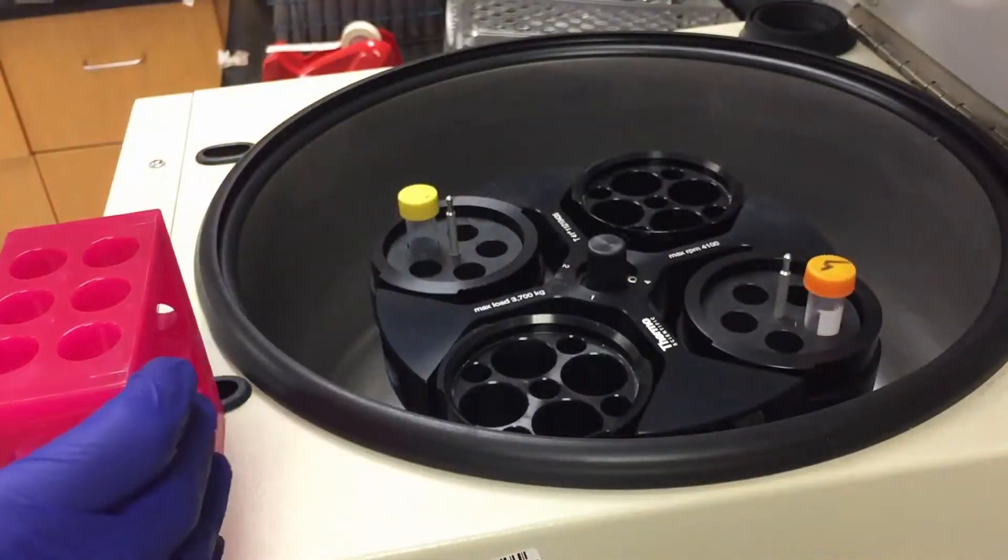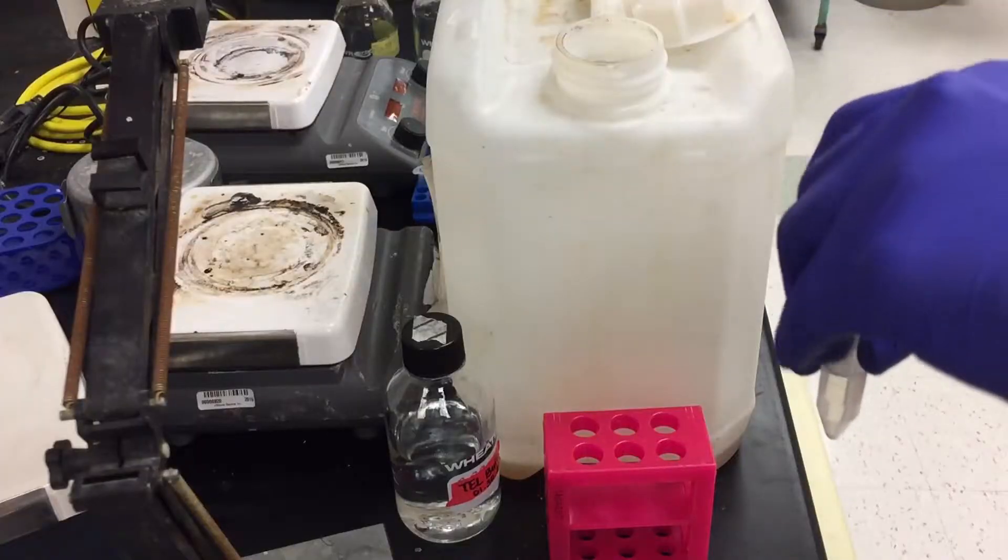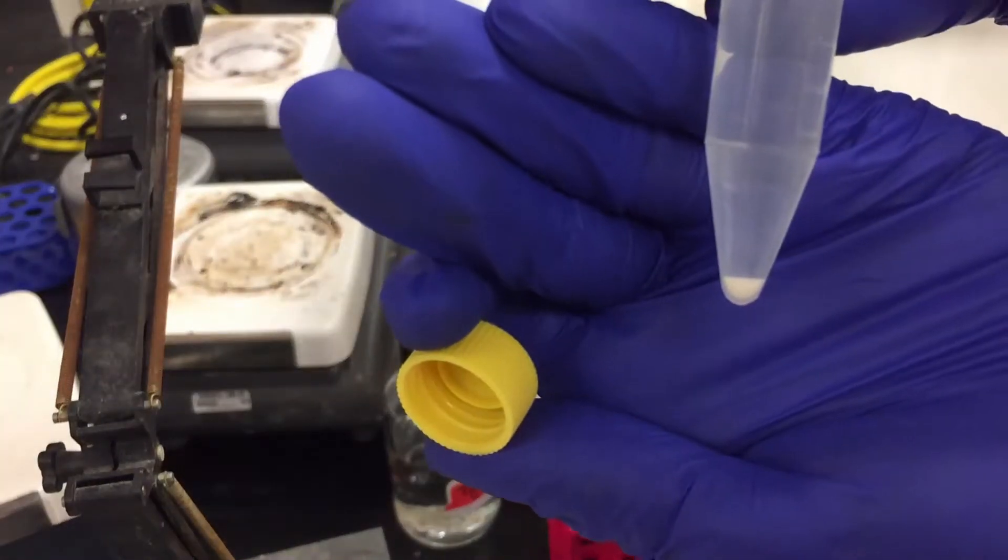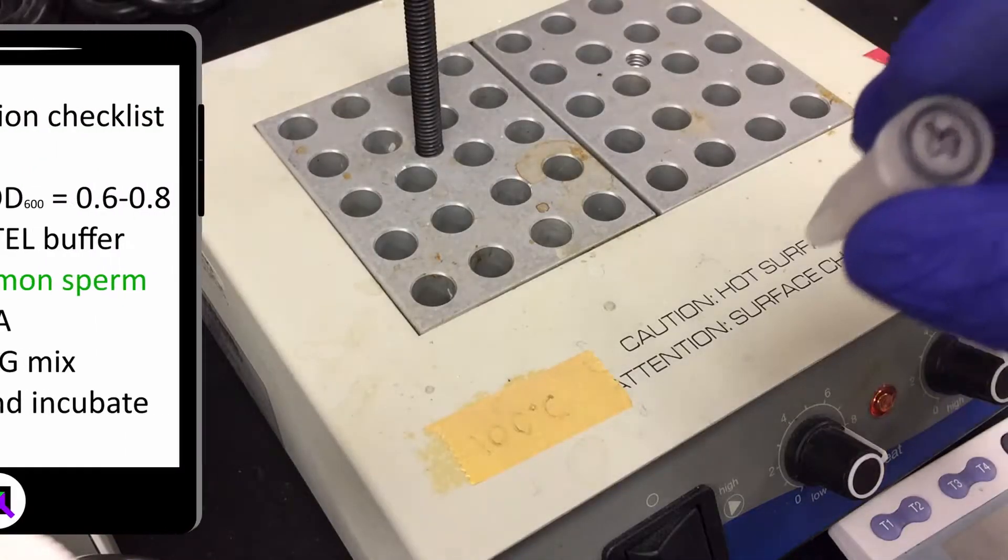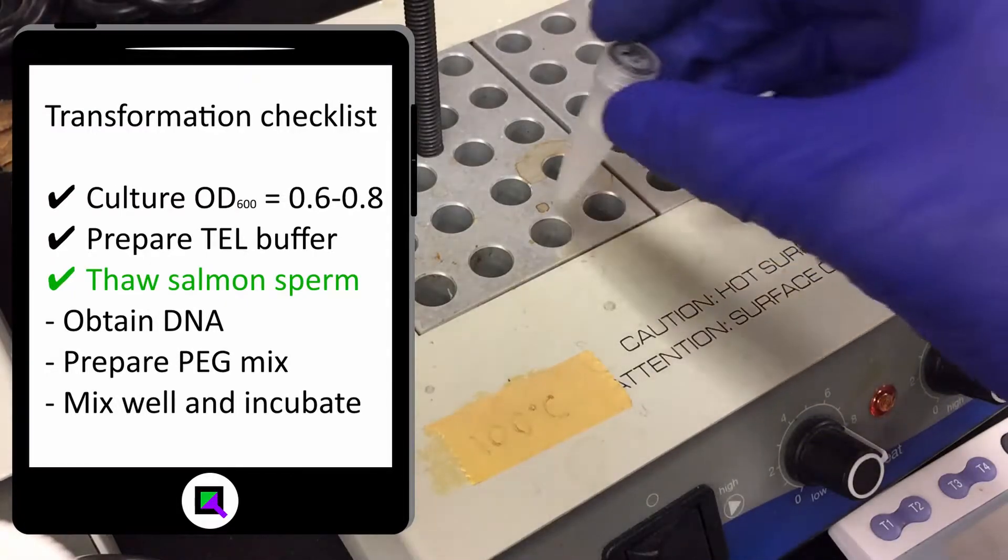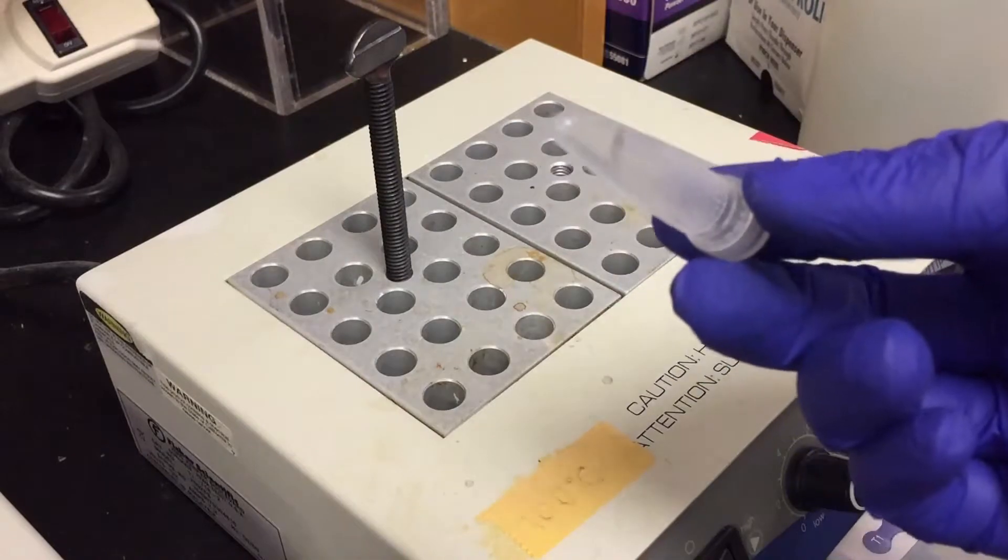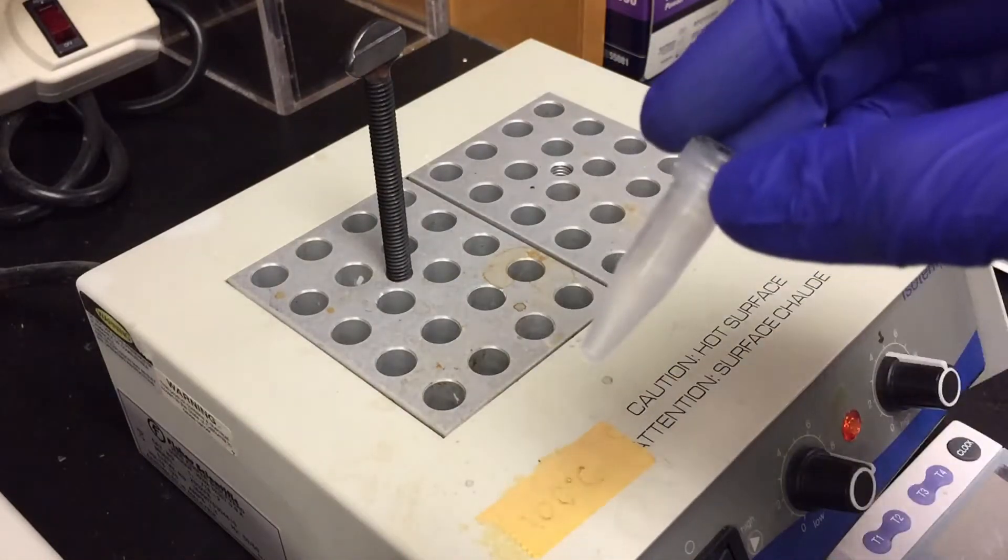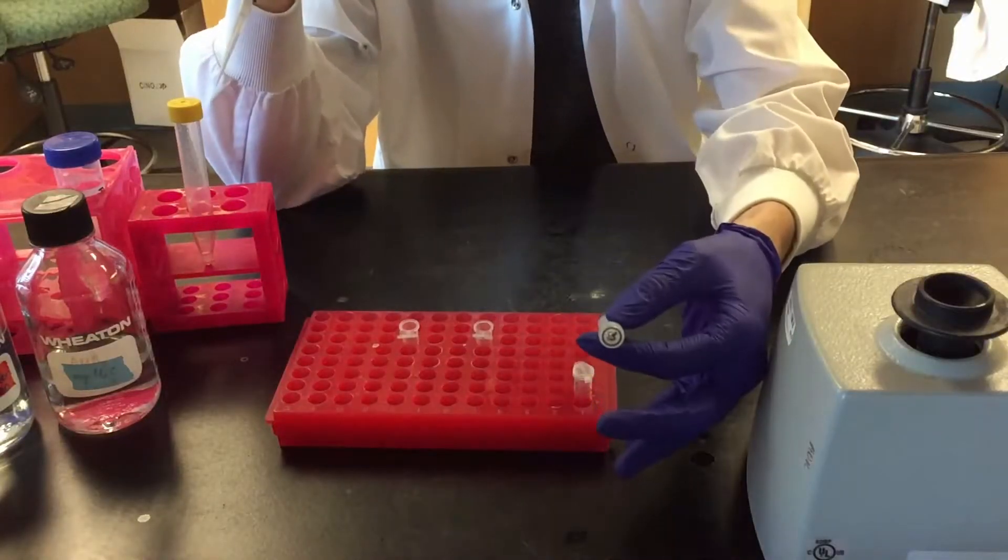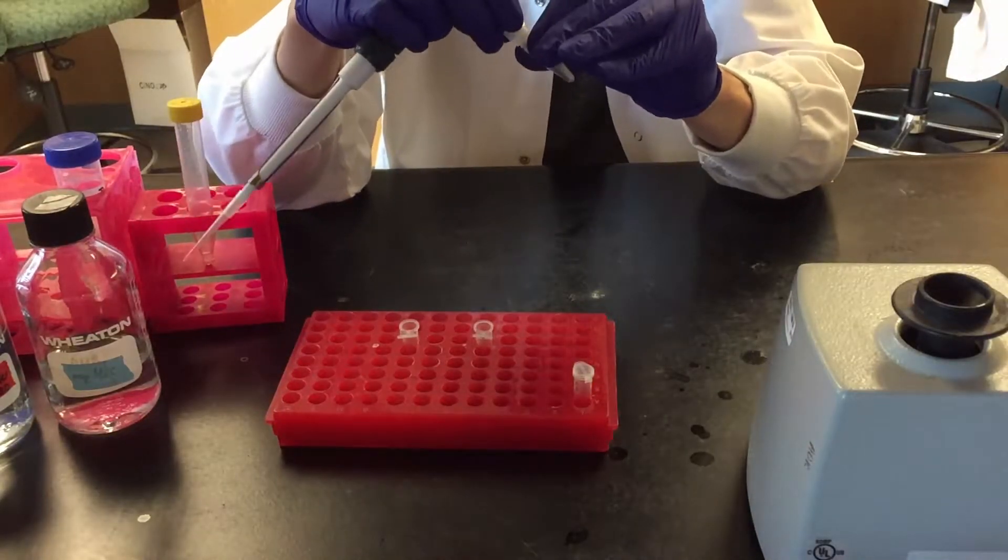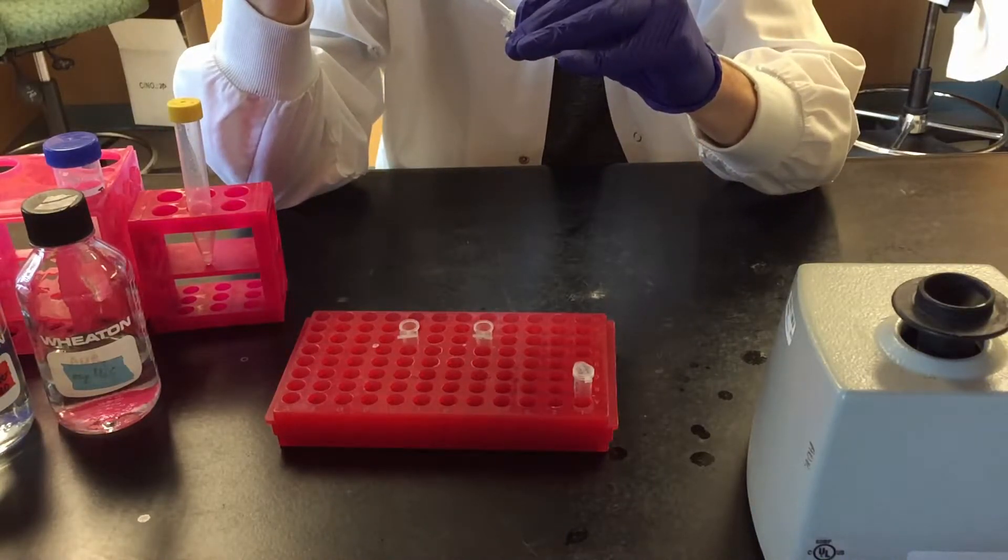Harvest the cells again and remove the wash buffer. At some point during the harvest, thaw salmon sperm DNA at 100 degrees. Add 35 microliters of salmon sperm to each tube after it has cooled again.